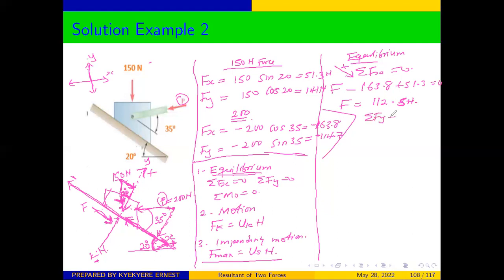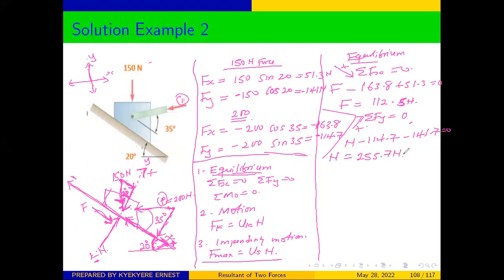Applying ΣFy = 0, with upward (away from surface) as positive: the normal reaction N is positive, the y-component of force P is −114.7 N (into the surface), and the y-component of the weight is −141 N (also into the surface). So: N − 114.7 − 141 = 0, giving N = 255.7 N.